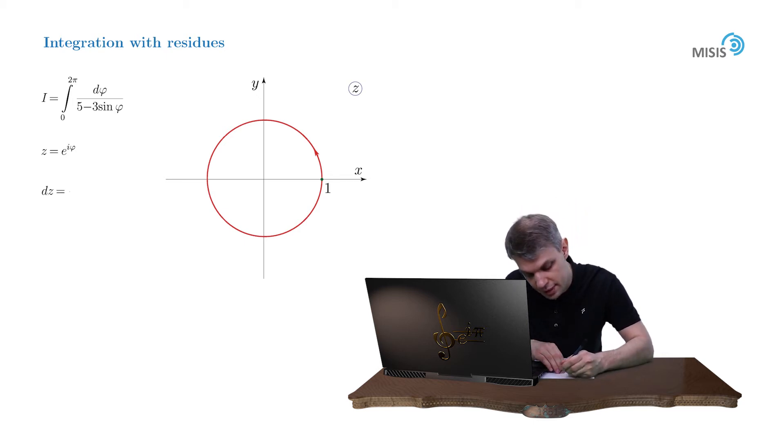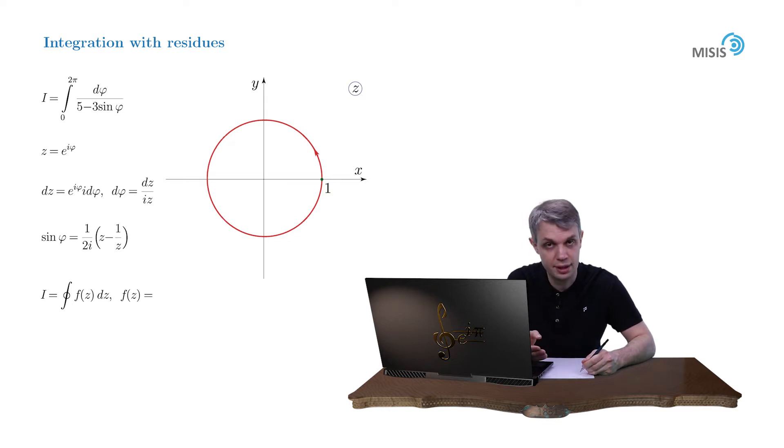dz equals e to iφ i dφ, so dφ is equal to dz over iz. Now let's plug in this change into our integrand. sin φ is transformed as 1 over 2i times (z minus 1 over z). As a result, we have a standard closed contour integral of a complex function f of z where the function itself after simple algebra is transformed into minus 2 over (3z² minus 10iz minus 3).